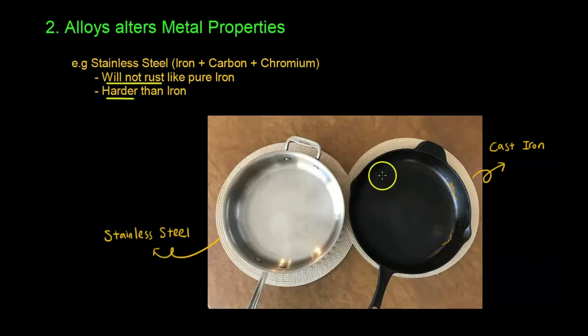Because iron reacts with oxygen in the air to form rust, but in the case of stainless steel it will not because it's a combination of three elements, and it does not react with oxygen that easily. And hence alloys alter metal properties as well.